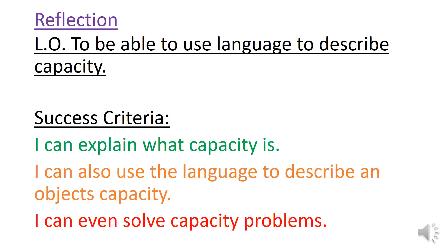Let's just reflect on what we've done today then. So we've again looked at explaining what capacity is and what it means. We've looked at language to describe an object's capacity and also language to describe the order of capacity. So least, smallest, most and biggest. And we are beginning to solve capacity problems. But again, we're going to be looking at this from tomorrow.